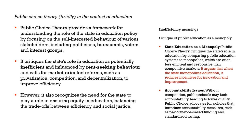Public choice theory provides a framework for understanding the role of the state in education policy by focusing on the self-interested behavior of various stakeholders, including policymakers such as politicians, bureaucrats, voters, and interest groups. The theory critiques the state's role in education as potentially inefficient and influenced by rent-seeking behavior, and calls for market-oriented reforms such as privatization, competition, and decentralization to improve efficiency. However, it also recognizes the need for the state to ensure equity, balancing trade-offs between efficiency and social justice.